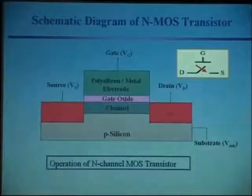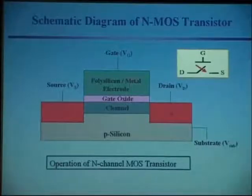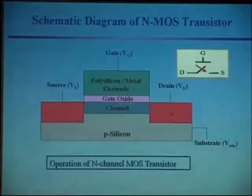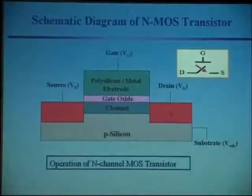This is an electrode, but this is an insulating oxide, so the charges cannot penetrate — they will stay underneath, over here. And if you have enough electrons here, it will convert the p-type into n-type. So basically, that's how we turn on this device.